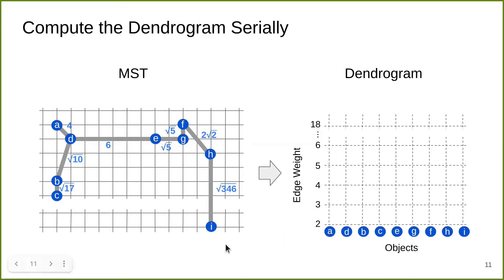On the left, I show the MST of the mutual reachability graph. Note that the edge widths here are not necessarily in scale to Euclidean distance because of the core distances in our distance measure. On the right, I show a dendrogram that we're going to construct. A dendrogram is a tree where the leaves are the input objects, shown on the x-axis. On the y-axis, I show the edge widths.